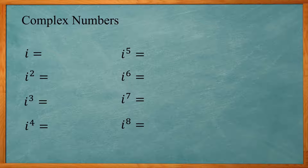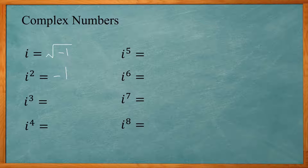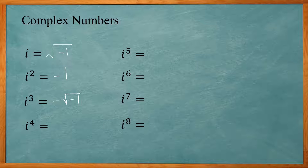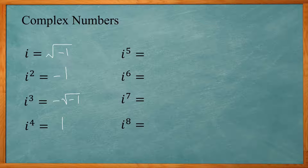i is the square root of negative 1. i squared equals the square root of negative 1 times itself, which gives negative 1. i to the third power is i squared times i, which gives negative times the square root of negative 1. i to the fourth is i squared times i squared, so negative 1 times negative 1 gives positive 1.